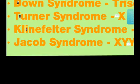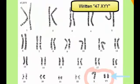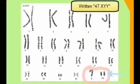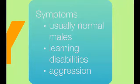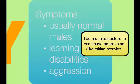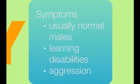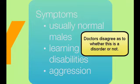Jacob syndrome is probably the most controversial of the chromosomal disorders. It's symbolized as XYY — men with Jacob syndrome have one extra Y chromosome. There's disagreement as to whether this is actually a disorder, because the majority of men with this are normal males. The theory is that the extra Y chromosome causes these males to produce more testosterone than normal, which can trigger learning disabilities such as ADHD and dyslexia, and higher than normal levels of aggression. In populations of males in prison or expelled from schools, a much higher proportion have an extra Y chromosome than in the general population. Some scientists think it is a disorder; some think it's not — it's still up in the air.